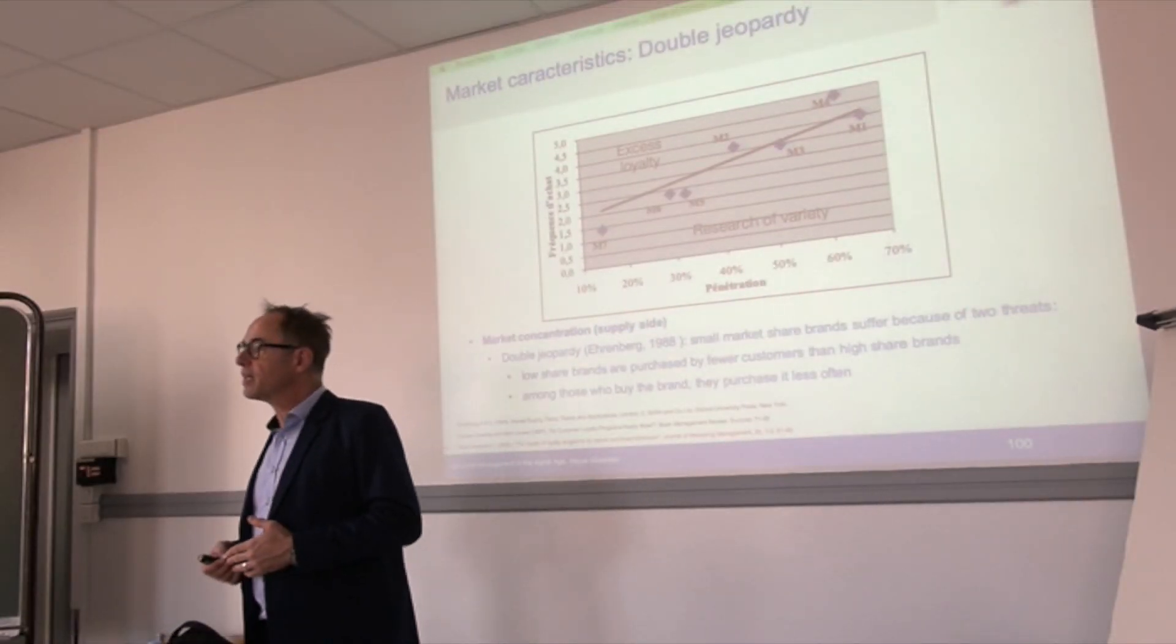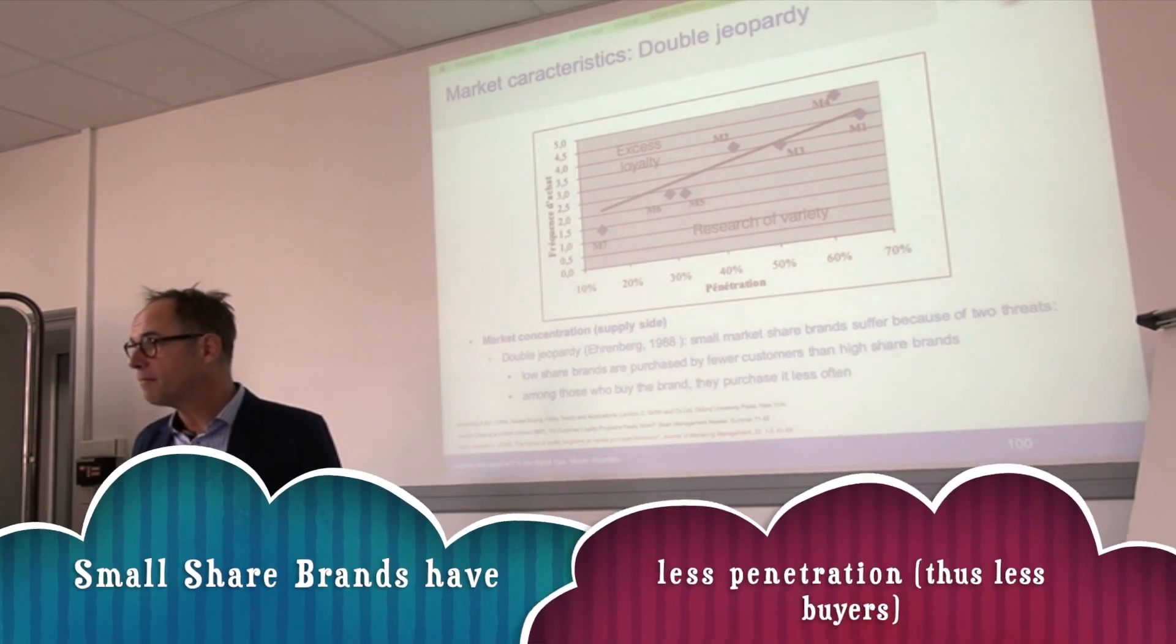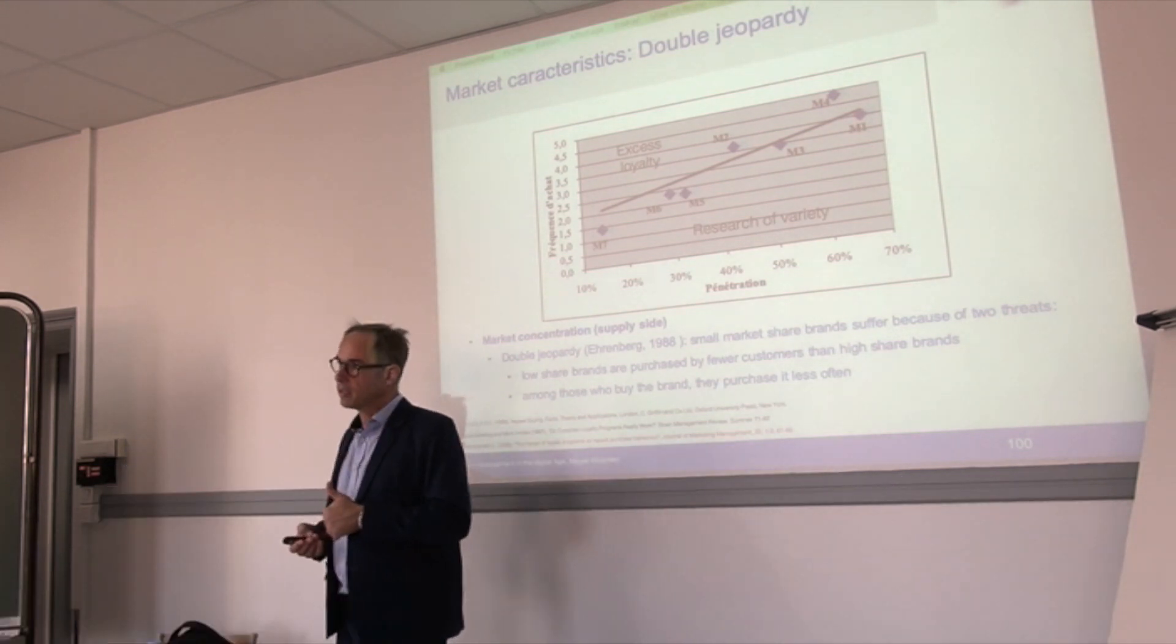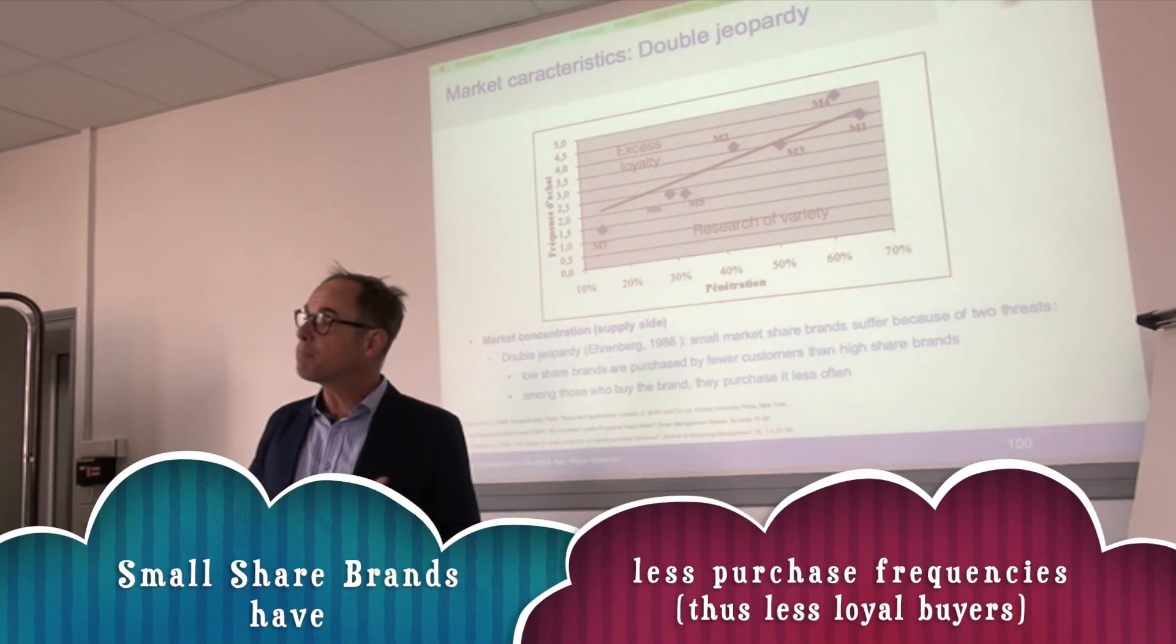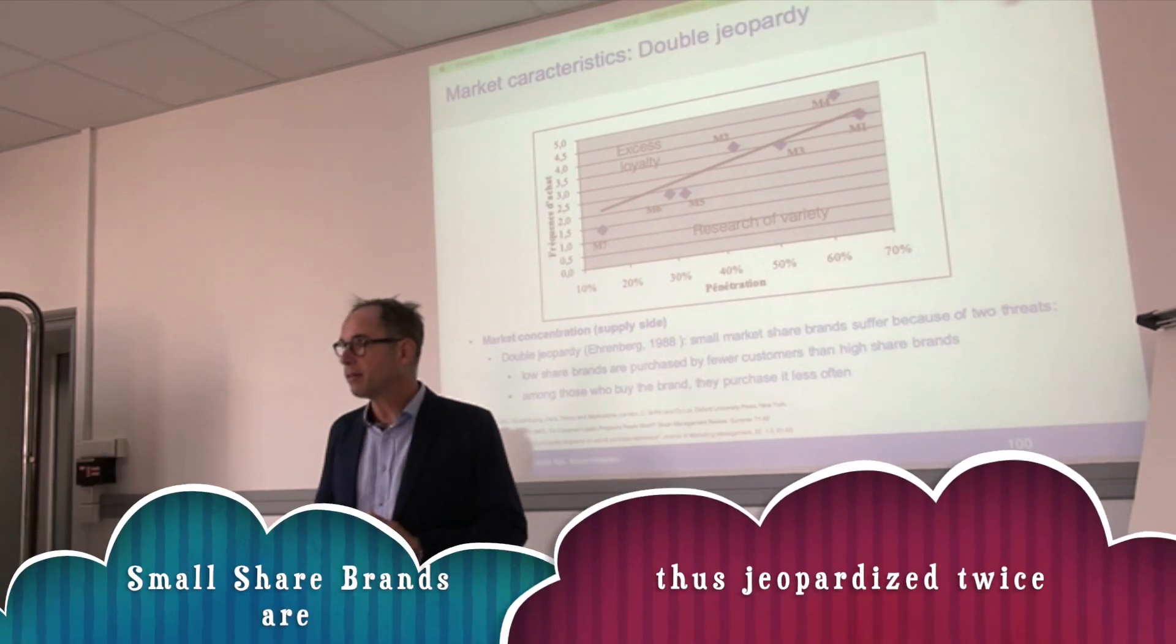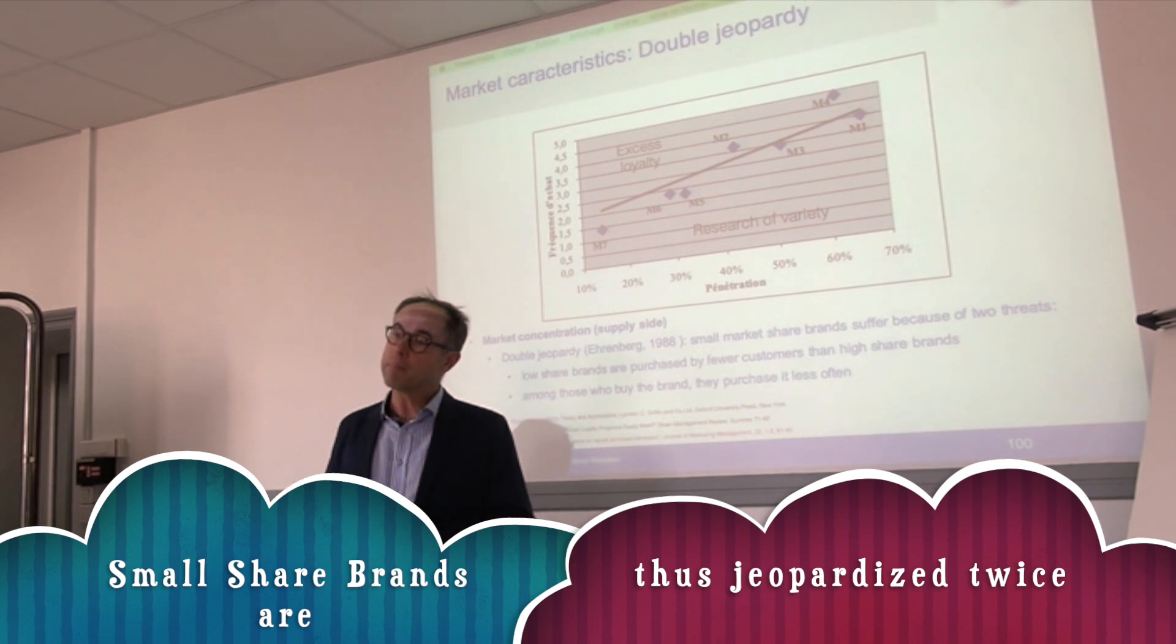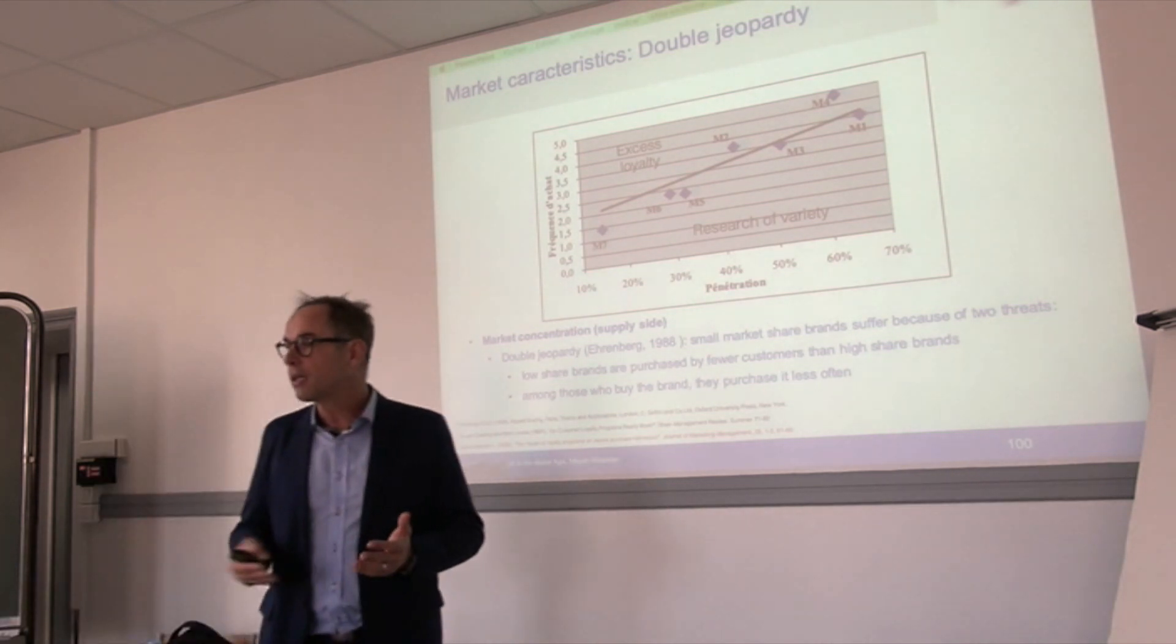Double jeopardy means that small share brands are jeopardized twice. First, they have less market share and subsequently less buyers or less penetration. This is the first jeopardy. The second jeopardy is they have less buyers and these buyers buy less often or are less loyal. So they are hit twice - they have less buyers, less penetration, and these buyers buy less often. This phenomenon has been found in basically all sectors.